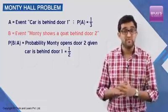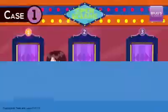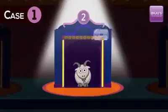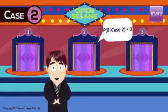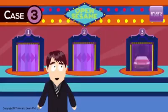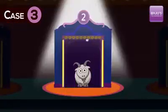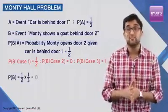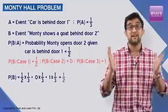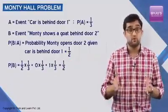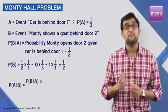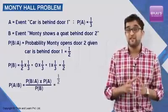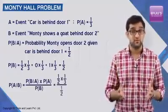The tricky calculation is P(B). Remember, we are assuming we initially chose door 1. If the car is behind door 1, Monty will show us a goat behind door 2 half the time. If the car is behind door 2, Monty will never show us a goat behind door 2. If the car is behind door 3, Monty shows us a goat behind door 2 every time. Thus P(B) = (1/2)(1/3) + (0)(1/3) + (1)(1/3) = 1/2. Using Bayes' theorem, P(A|B) = P(B|A) × P(A) / P(B). Substituting: (1/2 × 1/3) / (1/2) = 1/3.